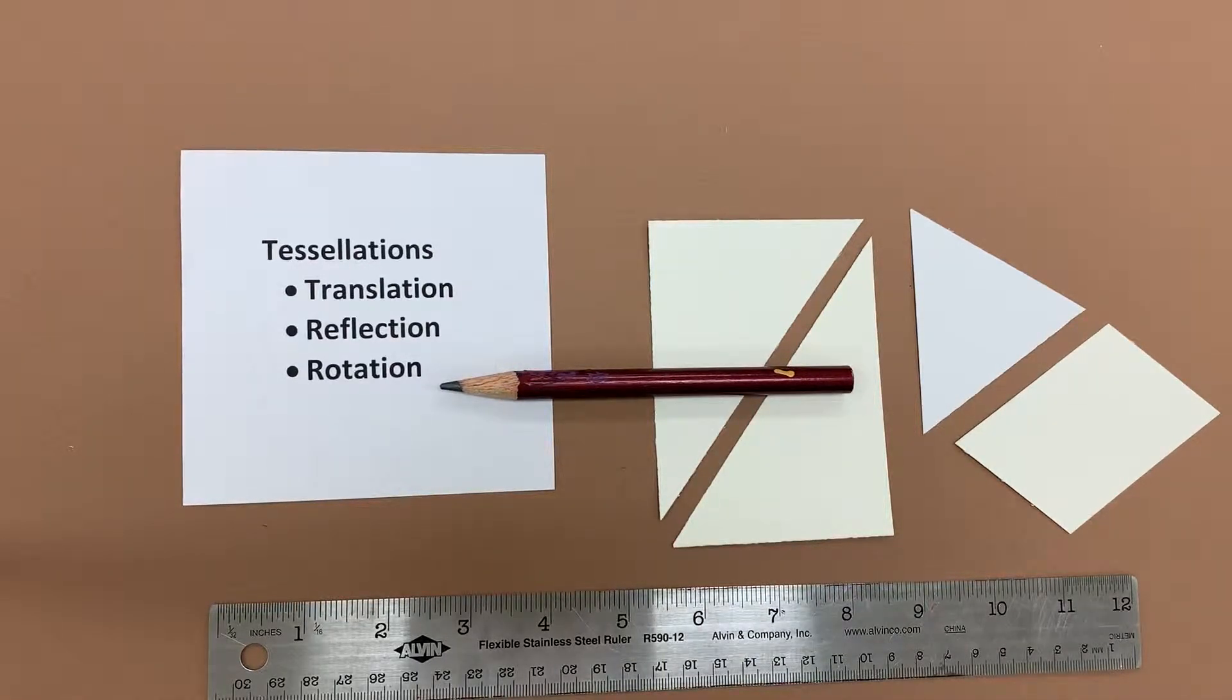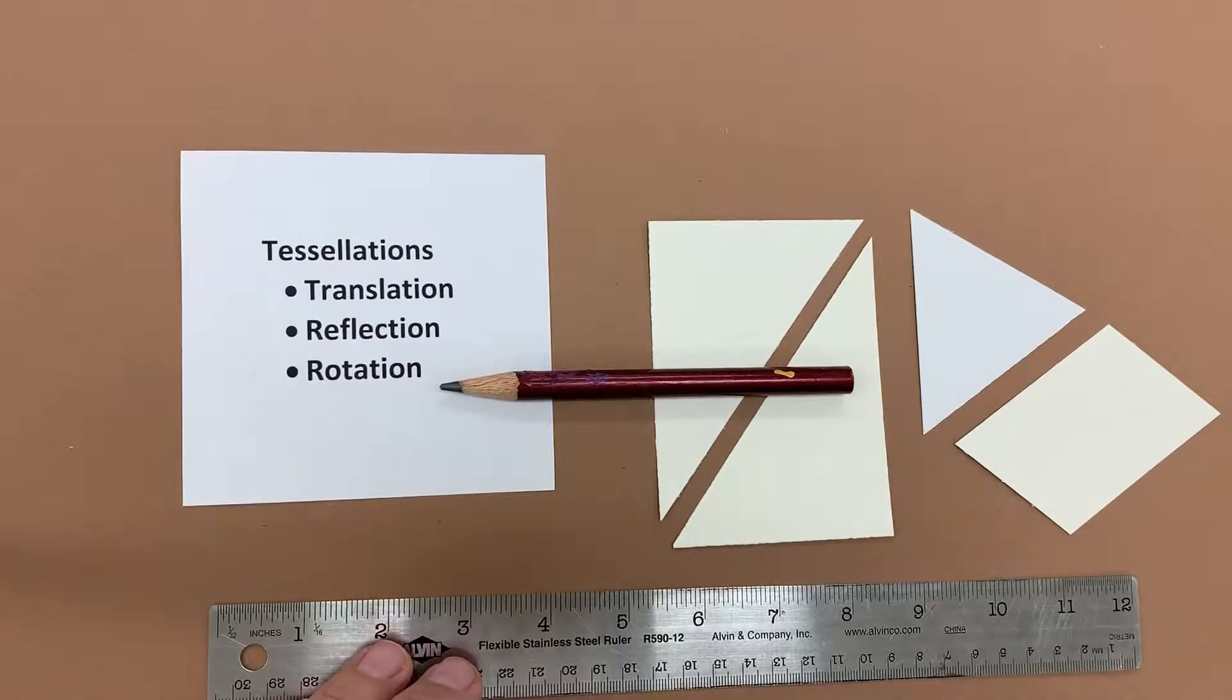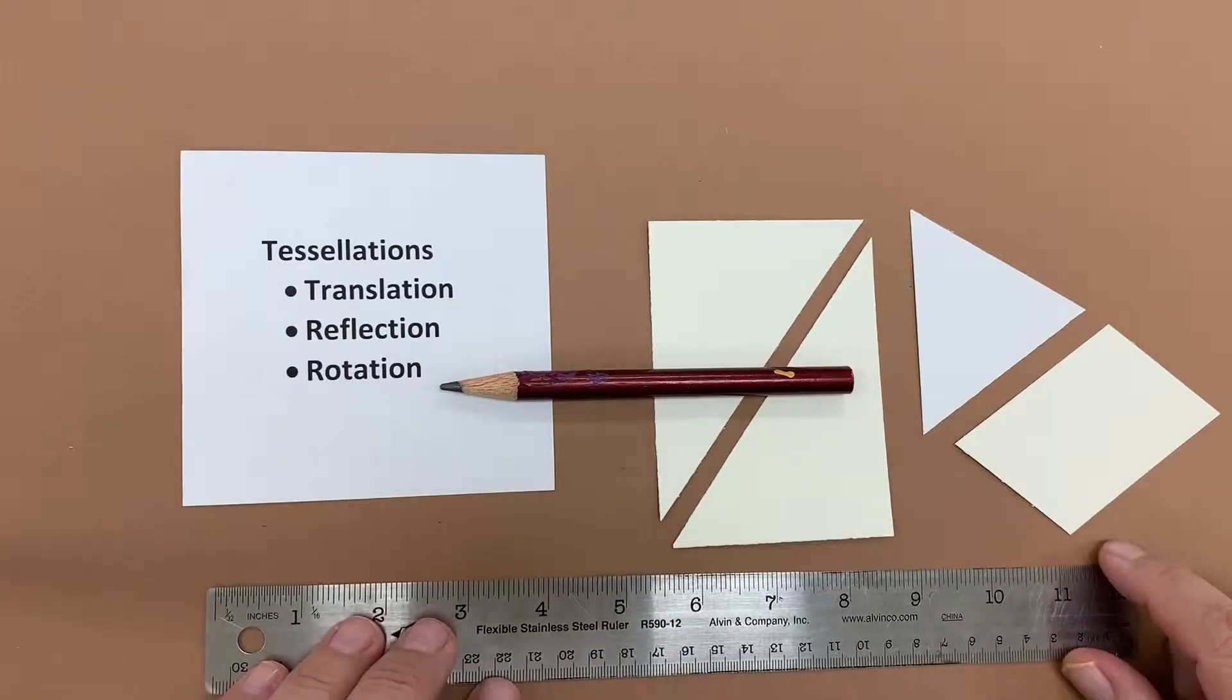Okay, now we're going to take a look at tessellations of triangles by rotation. For this you're going to need to have a ruler in order to make it work.